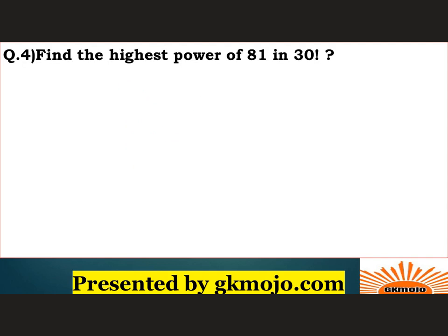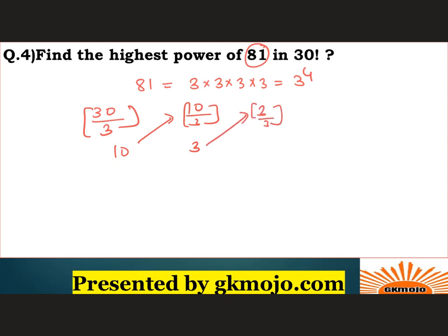Let's have a look at the next question. Find the highest power of 81 in 30 factorial. Now this 81 is not a prime factor, it's a perfect square. 81 can be written as 3 times 3 times 3 times 3, which is 3 to the power 4. So what we'll do - this is the shortcut method - first find out the highest power of 3 in 30 factorial, then we'll adjust it for 3 to the power 4. So what will we get? First 10 will be the quotient. Then divide again, 3 will be the quotient. Divide again, 1 will be the quotient. Add all three, you will get 13 plus 1, which is 14.